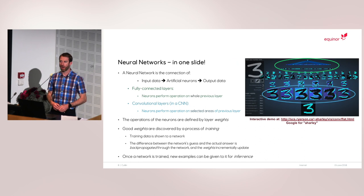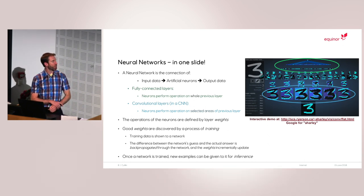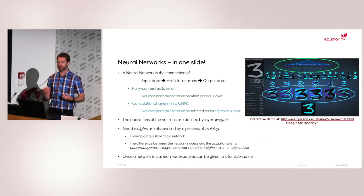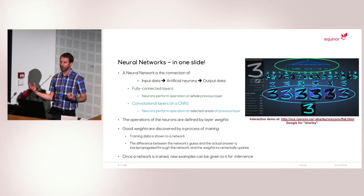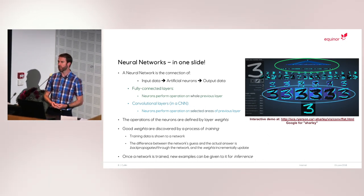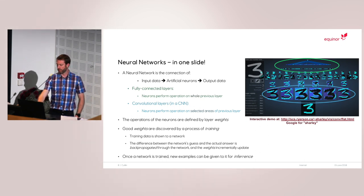Fortunately, others have already explained exactly how neural networks work. A neural network connects our input data to our output layer through either fully connected or convolutional layers. We train it by giving it examples of what we want it to produce, and it learns the weights in that network. Once trained, we can give it new examples and it tells us what it sees.